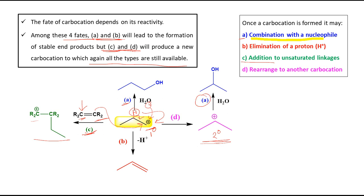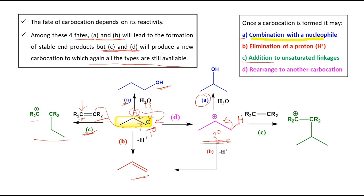To illustrate further, consider the new secondary (2°) carbocation generated. If process A occurs again, we get an alcohol, but different from the previous one since the positive charge is now in the middle. Process B, elimination of a proton, is also possible — the proton is removed from the terminal position, giving the same alkene as before. For process C, addition to an unsaturated linkage, this 2° carbocation acts as an electrophile toward the R₂C=CR₂ pi bond, again generating a new carbocation.